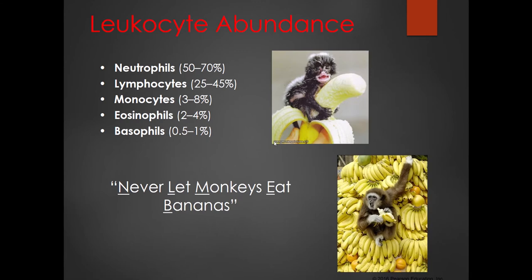In terms of abundance, neutrophils are the most abundant, followed by lymphocytes, monocytes, eosinophils, and lastly basophils. When looking through slides in lab, you may have difficulty finding a basophil — if you do see one, call the instructor over so everyone gets a chance to look. A good mnemonic to remember the abundance order is 'Never Let Monkeys Eat Bananas' — Neutrophils, Lymphocytes, Monocytes, Eosinophils, Basophils. It's ironic because of course monkeys love bananas.